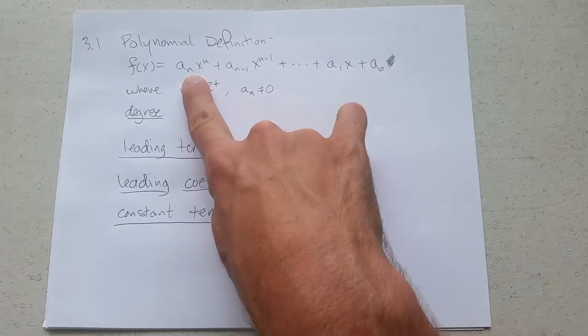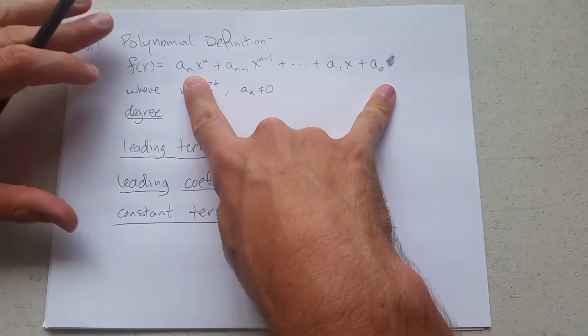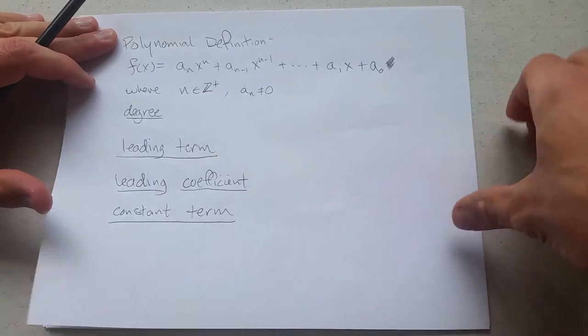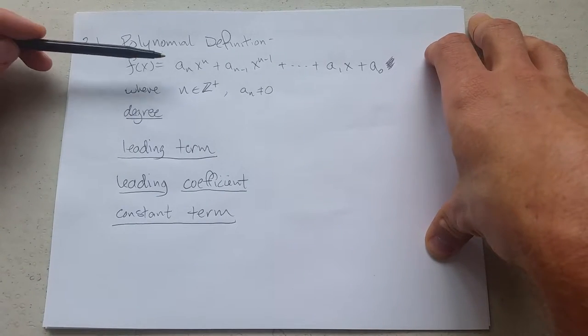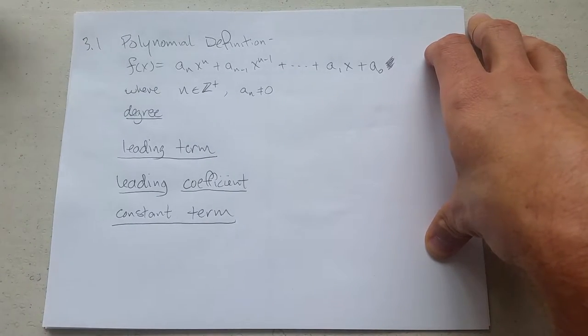So our polynomials won't usually be bigger than degree five. Maybe a homework question might be degree six, seven, or eight. But on midterms and quizzes, I'll keep the degree five and lower.